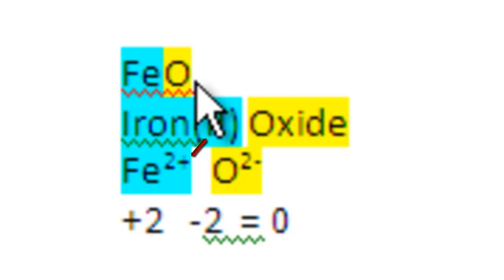Oxide is always negative 2, and there's one of them in the formula. There's one iron, and the sum of the charges must sum up to zero. So this guaranteed negative 2 must be added to positive 2 to get zero. Therefore, this must be iron 2.